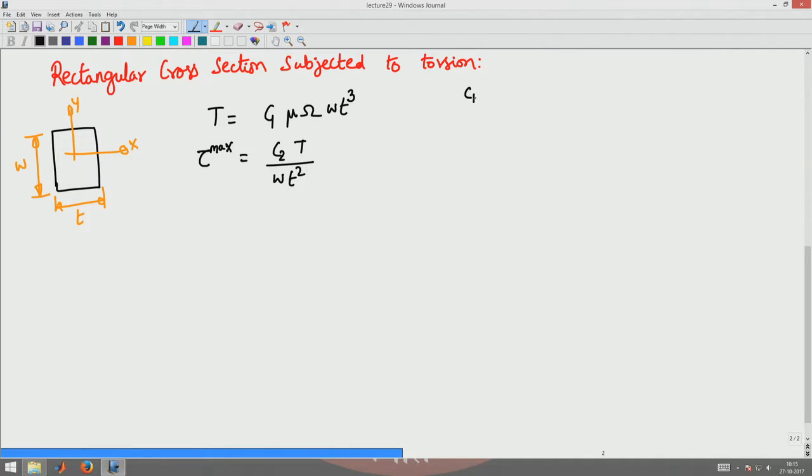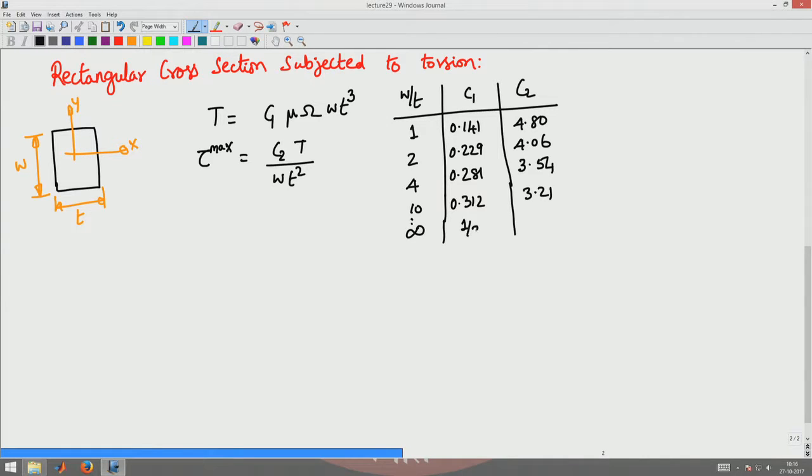C1 and C2 are constants which are a function of w by t. In particular, when w by t is 1, C1 is 0.141 and C2 is 4.8. If this is 2, it rises to 0.229 and 4.06. If it is 4, this is 0.281 and 3.54. If it is 10, it is 0.312 and 3.21. In particular, if it is infinity, this goes to 1 by 3 and this is 3.